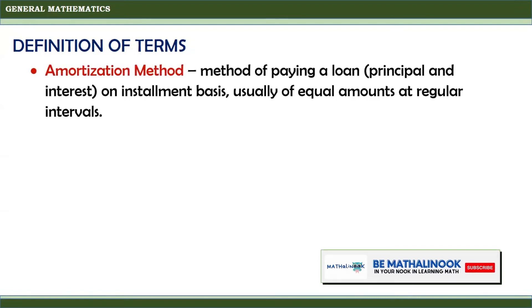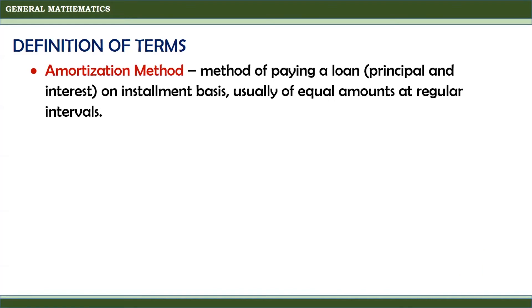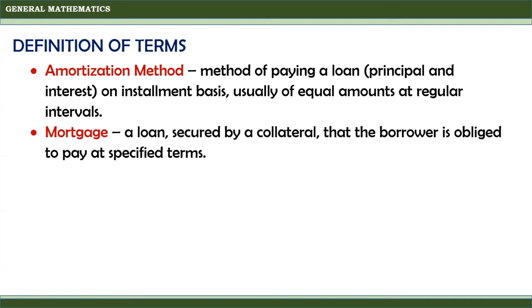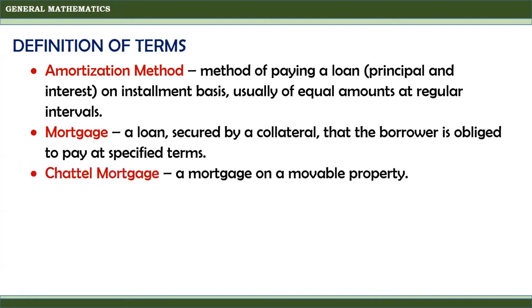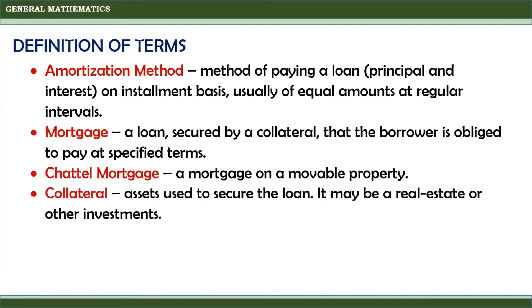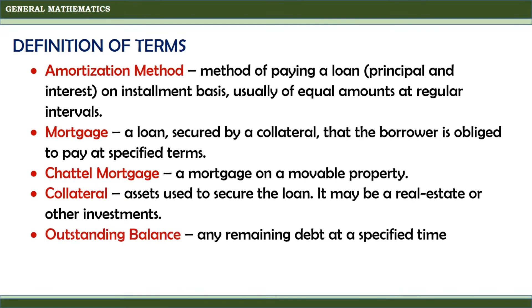These are other terminologies we need to learn to understand our lesson. Amortization method is a method of paying a loan — it may be principal and interest on an installment basis, usually of equal amounts at regular intervals. Mortgage is a loan secured by a collateral that the borrower is obliged to pay at specified terms. Chattel mortgage is a mortgage on a movable property. Collateral are assets used to secure the loan, such as real estate or other investments. Outstanding balance is any remaining debt at a specified time.